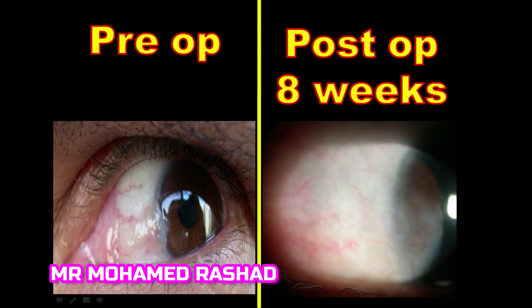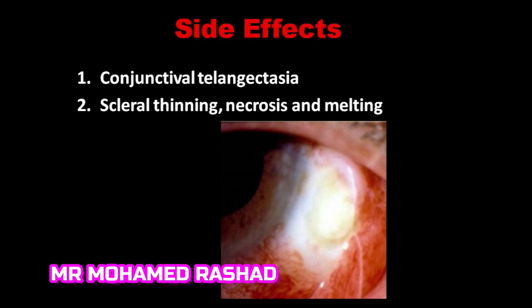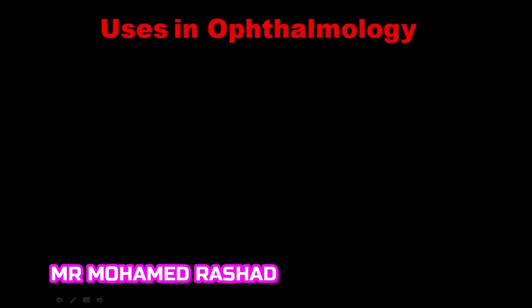Here is our case: a pre-operative picture on the left-hand side and the post-operative picture after eight weeks. The side effects of beta irradiation are very rare but can include conjunctival telangiectasia, scleral thinning, necrosis and melting, or very rarely lens opacity.